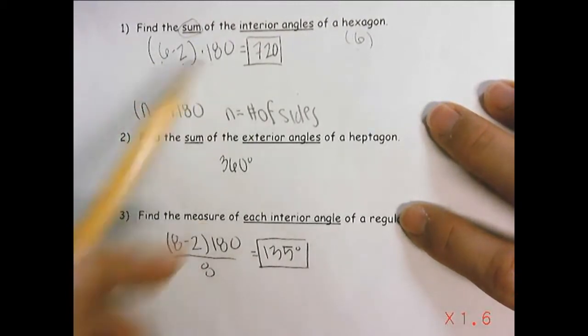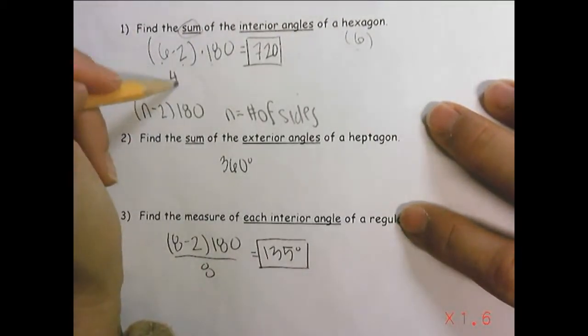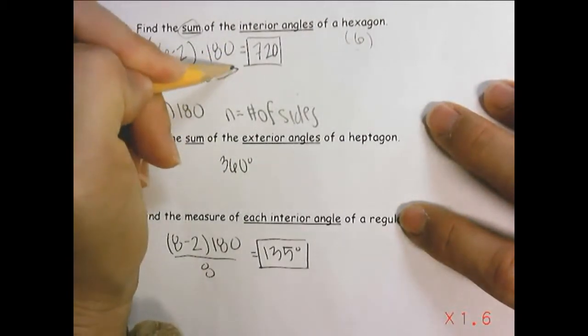So the number of sides is six, six minus two times 180, which if you want to think of it as four times 180, you would get 720.